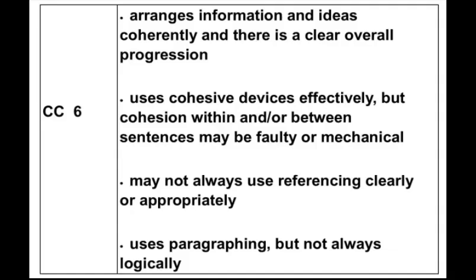Before we go on to the next example, I want to look at the writing band descriptors for Task 2, specifically coherence and cohesion at band 6 regarding paragraphing: 'Uses paragraphing but not always logically.' Remember, a paragraph contains a topic and then supporting sentences regarding that topic. Each paragraph should have one topic. Let's keep this in mind as we look at the next example.